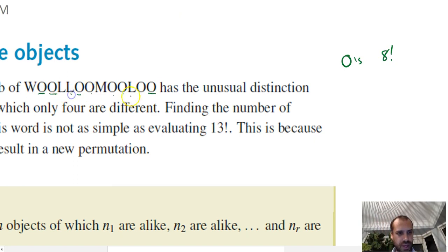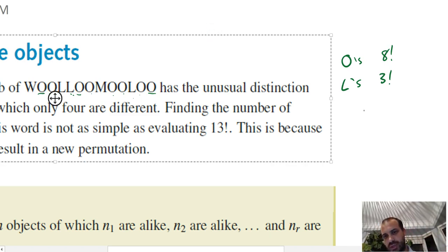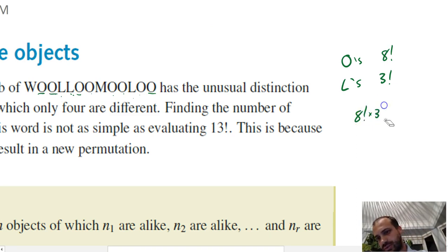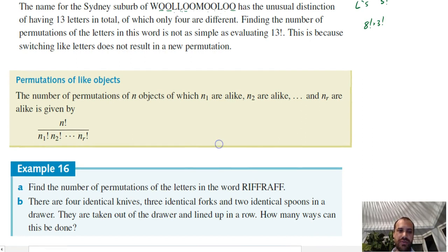I can swap all of the L's, 1, 2, 3, 3 factorial ways. But I can also swap two O's and swap one set of L's, or I could swap two O's and swap a different set of L's. So the total number of ways that I can swap O's and L's in this word so that you would still see exactly the same word is, using the multiplication principle, 8 factorial times 3 factorial. So that's how this formula comes to be, which you've seen before.